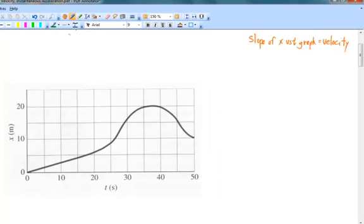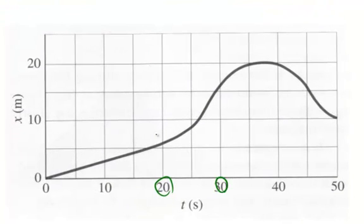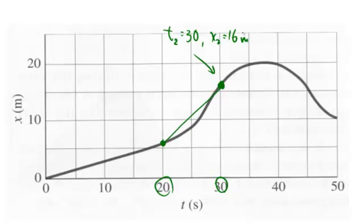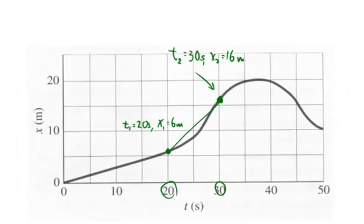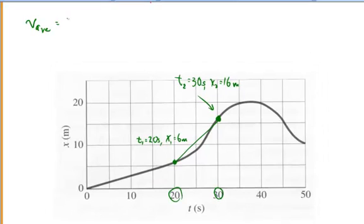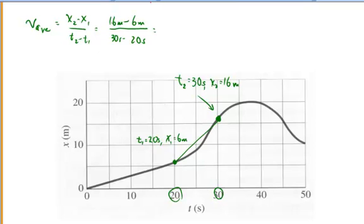For instance, if we wanted to find the average velocity between times 20 and 30 seconds, I'd go to the graph and select these points and calculate the slope. At time t equals 30 seconds, the position of the object looks like it's about 16 meters. And at time t equals 20 seconds, the position looks like it's about 6 meters. To find the average velocity, take the difference in positions divided by the difference in time: 16 meters minus 6 meters divided by 30 seconds minus 20 seconds, which gives 1 meter per second.